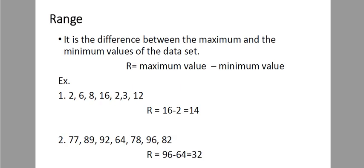Let's start first with ungrouped data. For the range, it is just the difference between the maximum and the minimum values of the data set. For example, number 1, the highest value is 16 and the lowest value is 2, so 16 minus 2 is 14. For number 2, the highest is 96 and the lowest is 64, so the difference is 32. For the range, you will just consider the maximum and the minimum values only.